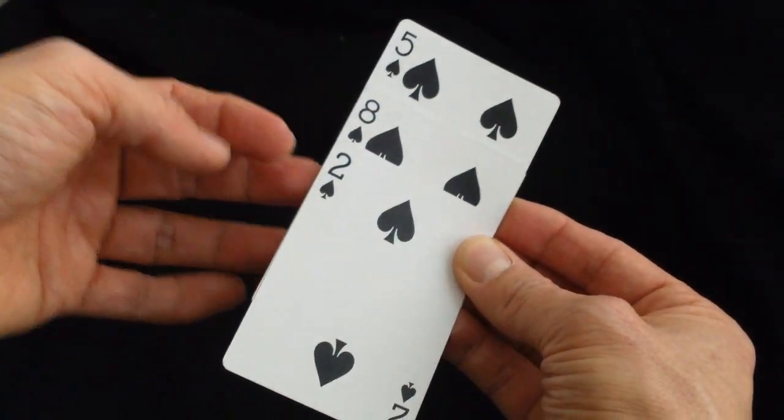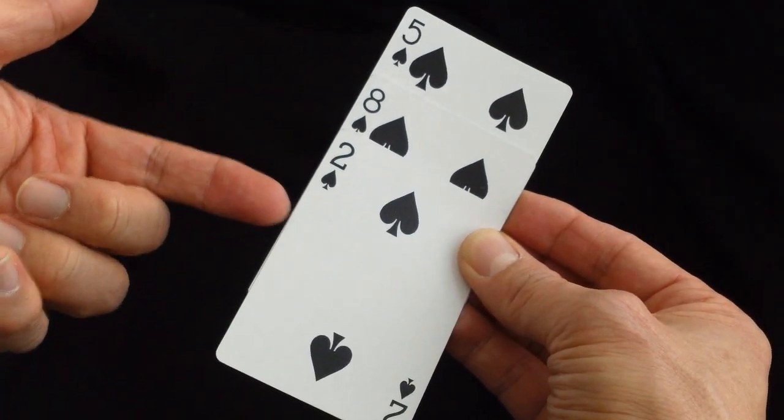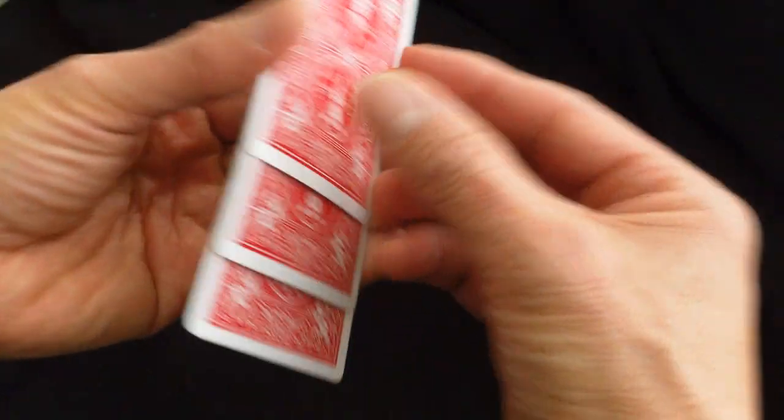Now to perform the trick, you bring it out, you ask the spectators to look at the three cards and try to remember them. You turn it over in your hand.